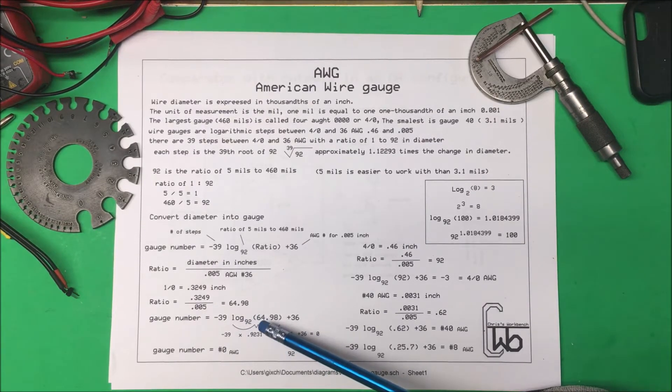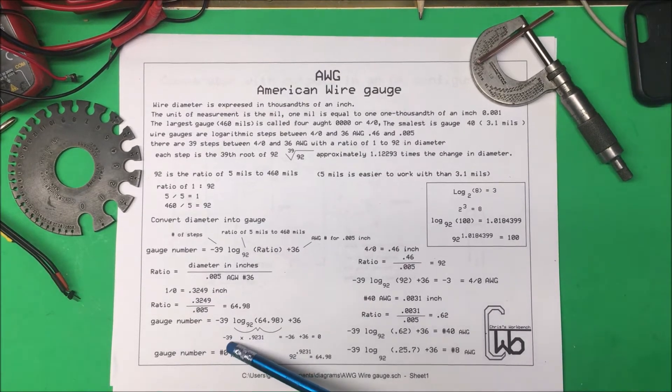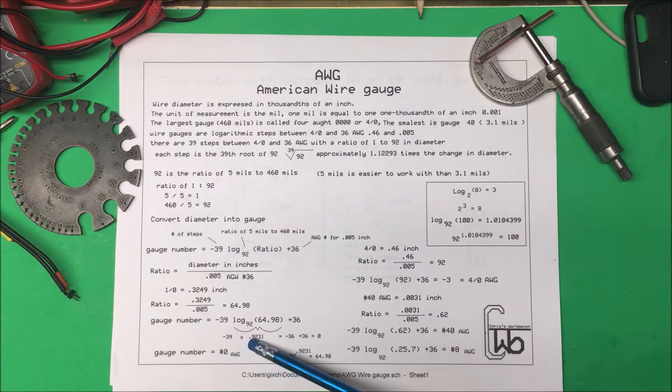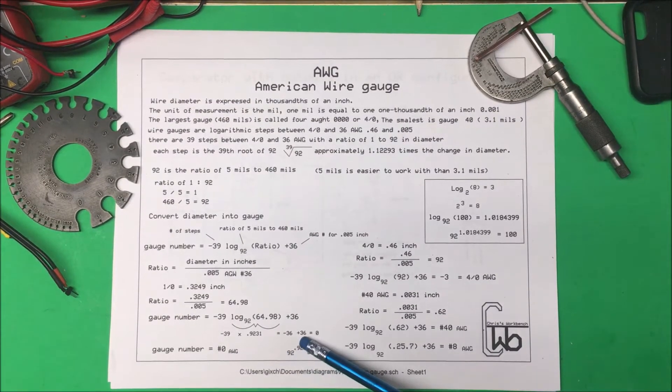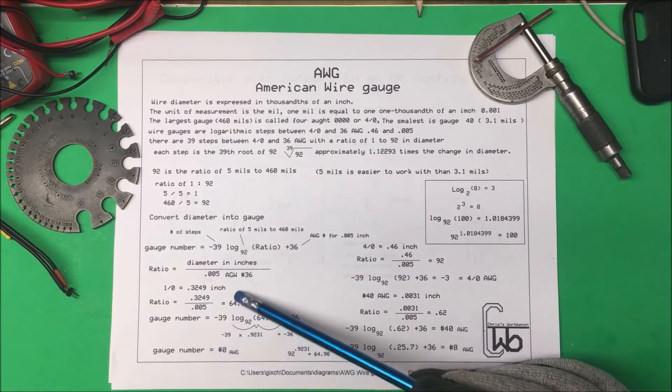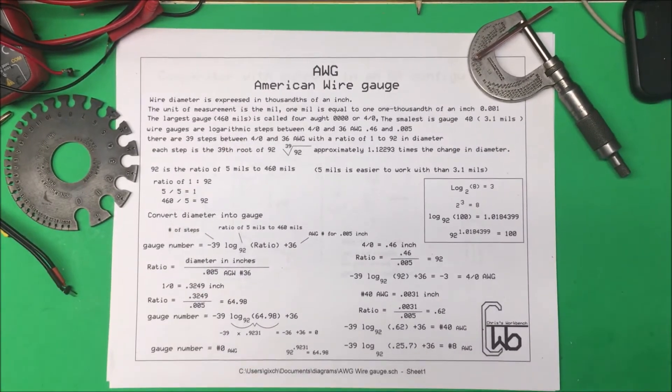This equals .9231 and if we multiply that by minus 39 that comes out to 36, so 36 minus 36 plus 36 equals zero. So 1-0 wire gives us a zero.